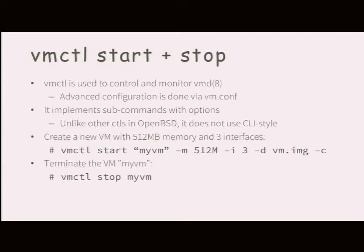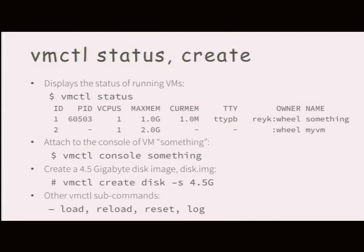A simple example: 512 megabytes of memory, three interfaces, a disk image, and the -c flag to connect to the console at startup. The status output will change — the PID of the VM process is not that important to most users, and when you run 'vmctl status <vmname>' you'll get more information like the assigned IP address. The current status is like this, but it will be improved before the next release.